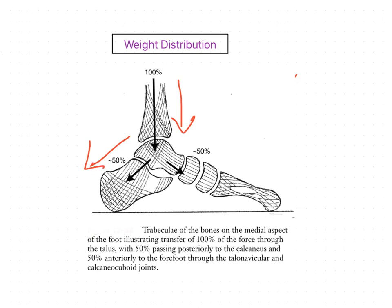The remaining 50% or less passes anteriorly through the talo navicular and calcaneo cuboid joints to the forefoot. The pattern of weight distribution through the foot can be seen in the trabecular system.